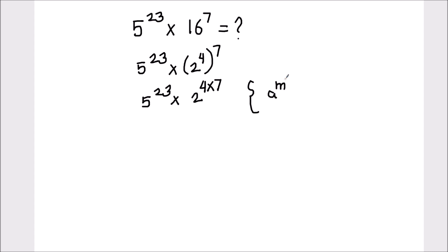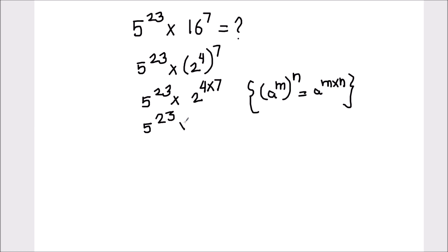This will be 2 raised to power 4 times 7, because of the law of exponents which says a raised to power m, whole raised to power n, equals a raised to power m times n. So my expression will be 5 raised to power 23 times 2 raised to power 28.